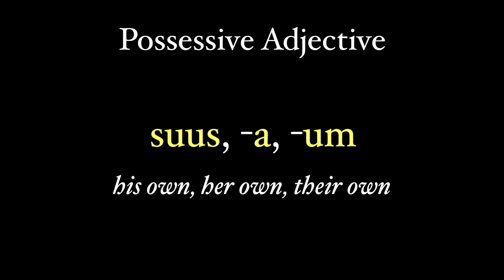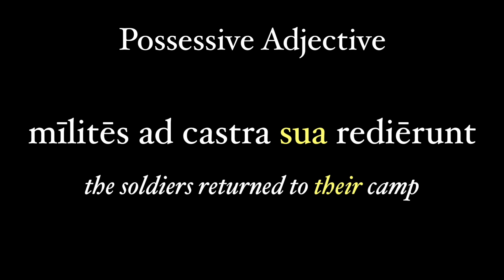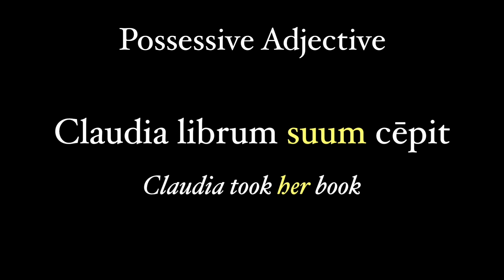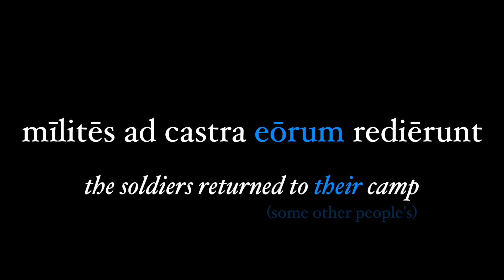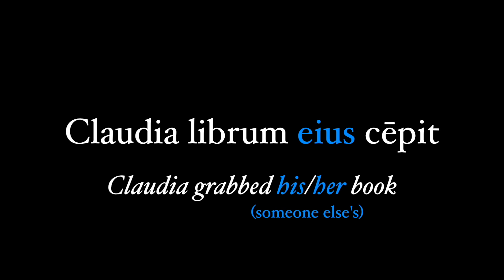Related to this is the possessive adjective suus. It too can be third-person singular or plural, and it's always the possessive of the subject. 'Milites ad castra sua redierunt' — the soldiers returned to their camp. 'Claudia librum suum cepit' — Claudia took her book. Note that we don't use the genitive sui here, but the possessive adjective — that's a pretty hard and fast rule. But if we wanted a different third-person possessive, we would use the genitive of another noun or pronoun: 'milites ad castra eorum redierunt' — the soldiers returned to the camp of those other people — or 'Claudia librum eius cepit' — Claudia grabbed his or her book, not her own.